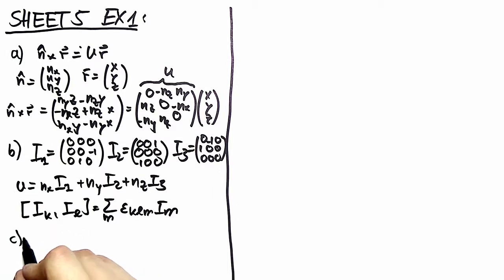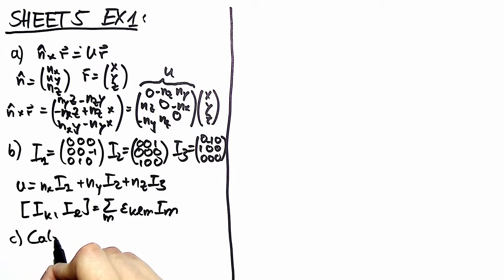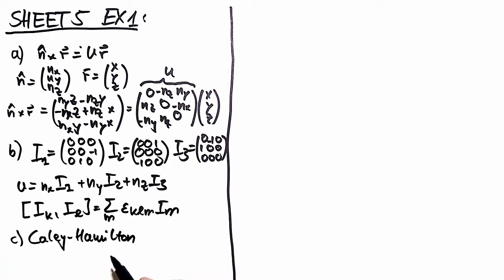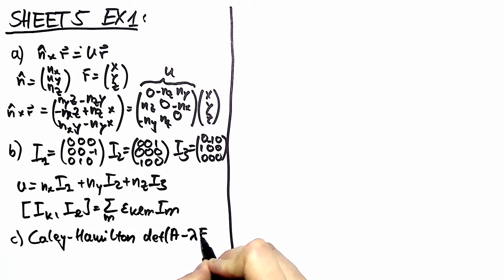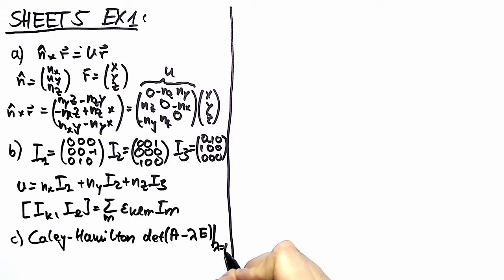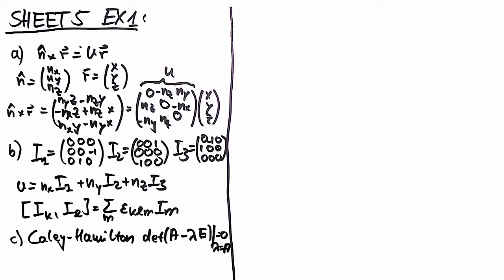In part c we use the Cayley-Hamilton theorem. The Cayley-Hamilton theorem states that if you insert into your characteristic polynomial your original matrix, it gives you zero. And this is very useful to shift the difficulty of computing powers of your original matrix to computing the characteristic polynomial of your matrix.